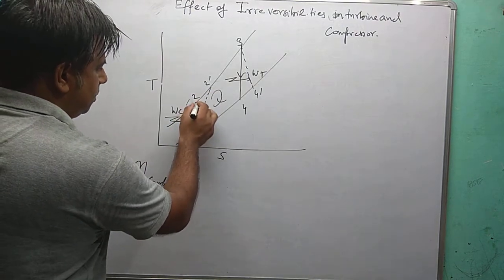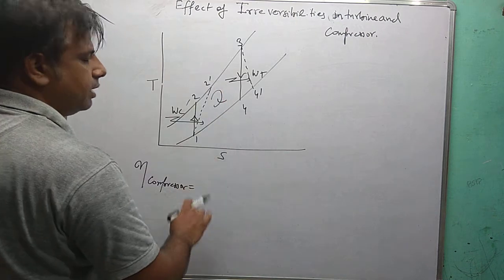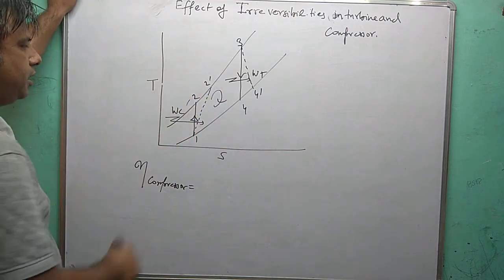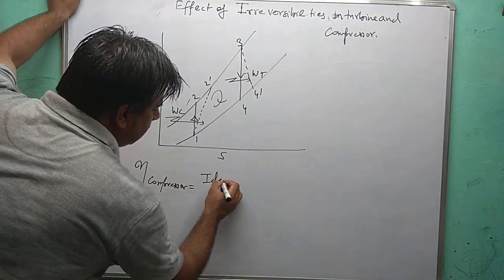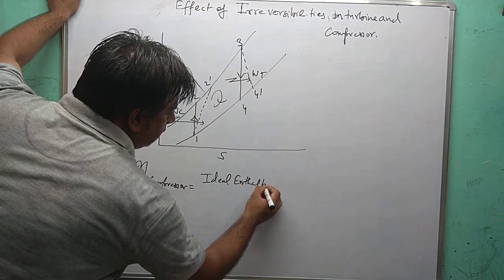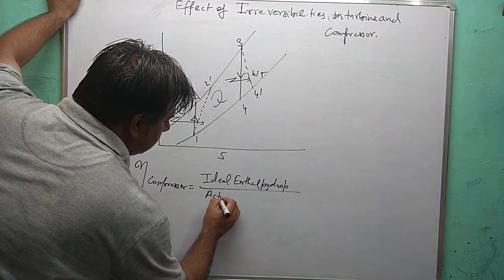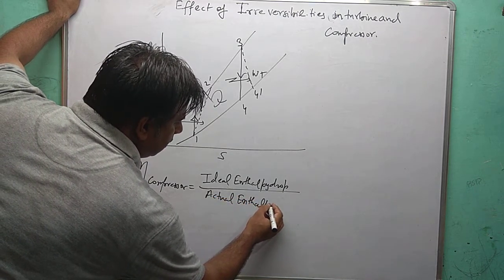The larger effect length goes in the denominator and the smaller length goes in the numerator. So this is my ideal enthalpy drop, ideal enthalpy drop over actual enthalpy drop.